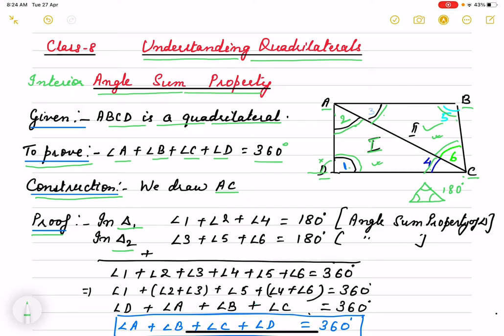So angle 1, if you look, it is angle 1 plus angle 2 plus angle 4 is 180 degrees. Why? Because angle sum property of a triangle. In triangle 2, this one, angle 3 plus 5 plus 6 is 180 degrees. Same reason. I am adding it.